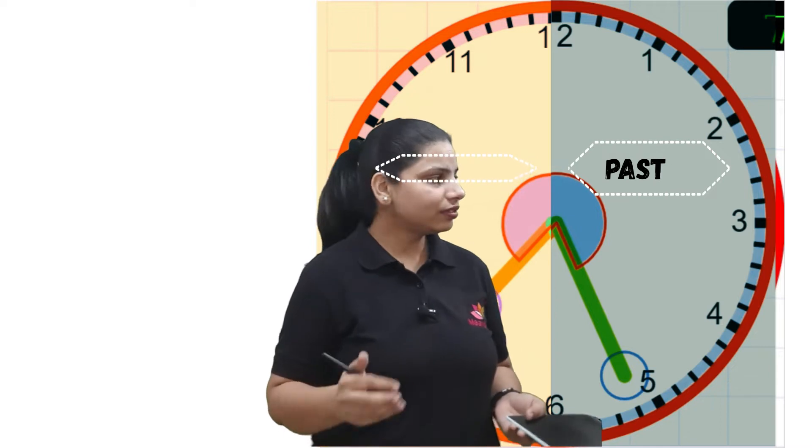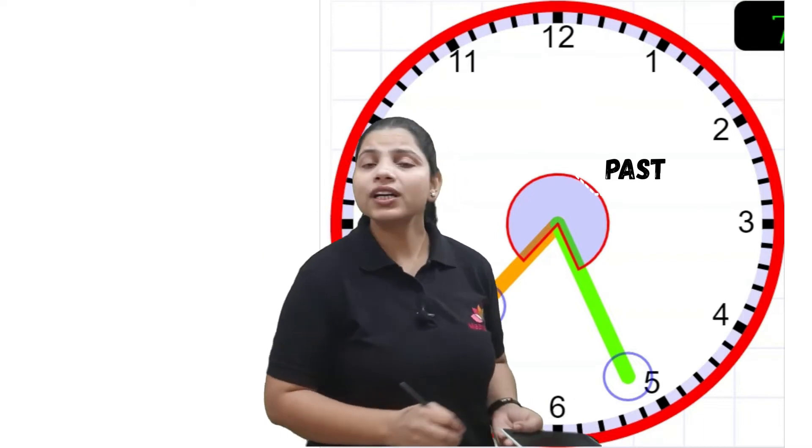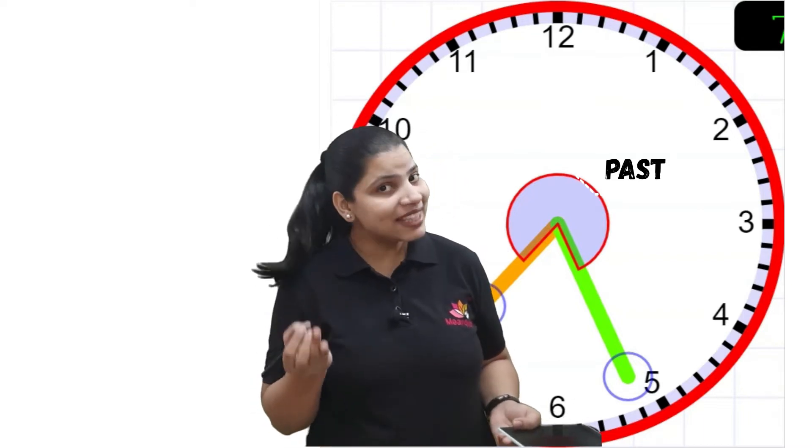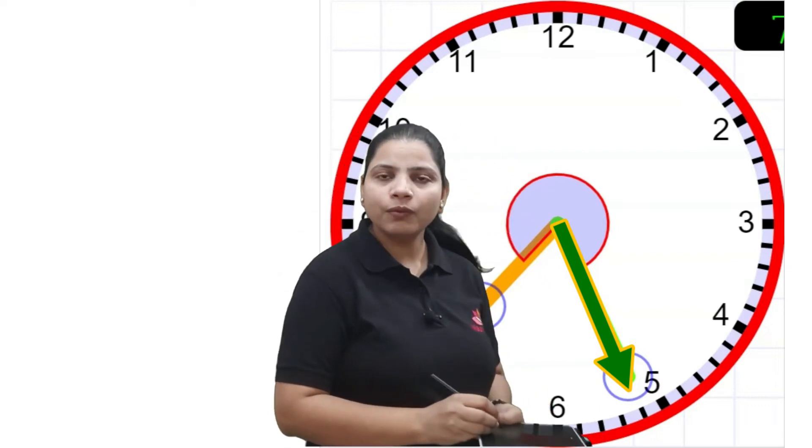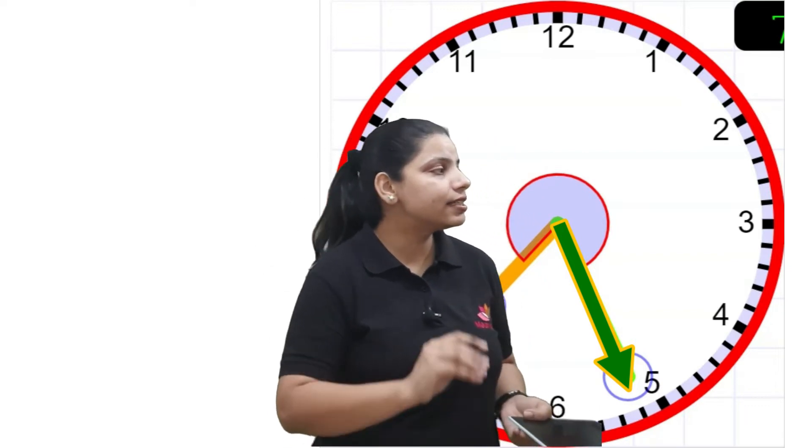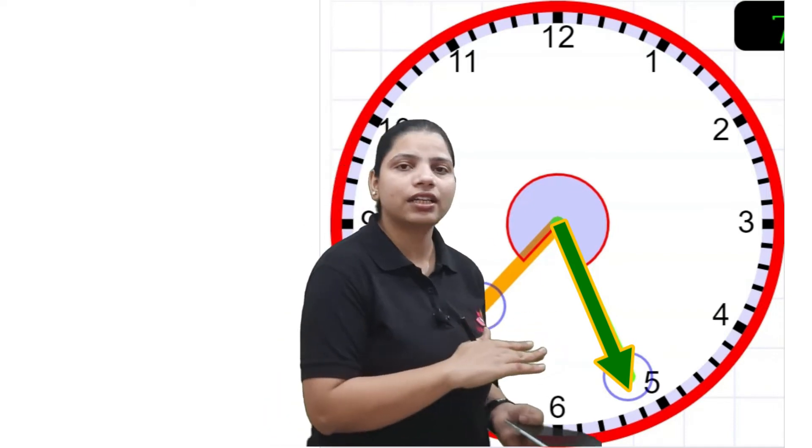That means, let's say for example, this time it's past. Why? Which one is the minute hand? Yes, the green one. So the green one is lying in which area, the smaller area or the larger area? Which side of the clock face is it? It's lying on the smaller area where smaller numbers are there, so it's past.